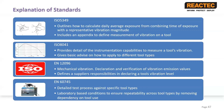So all tool manufacturers need to comply with EN 12096. EN 60745 is the standard which defines the detailed test protocol needed for specific types of tools and it is a series of standards. They are laboratory-based conditions to ensure repeatability across tool types, and it does this by removing the dependency on how the tool is used.